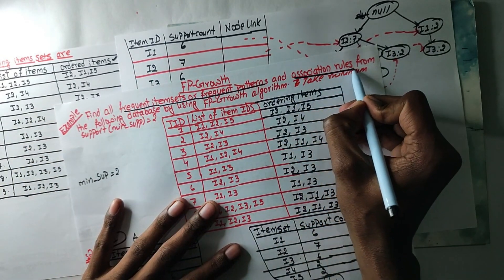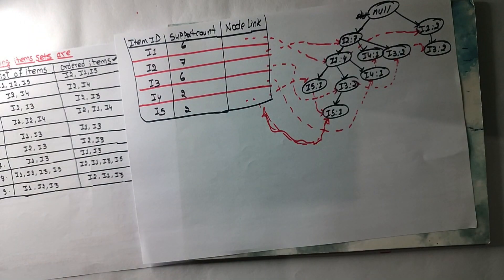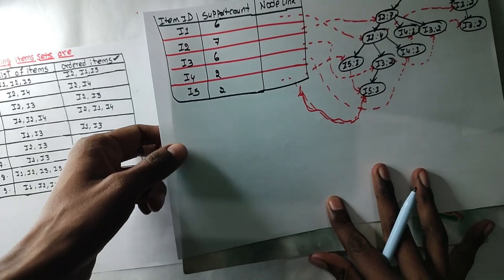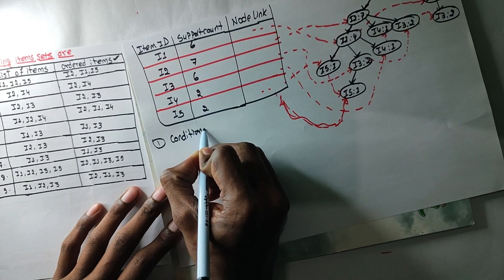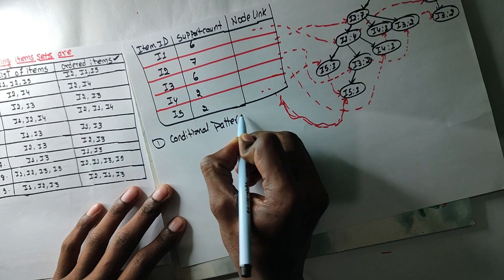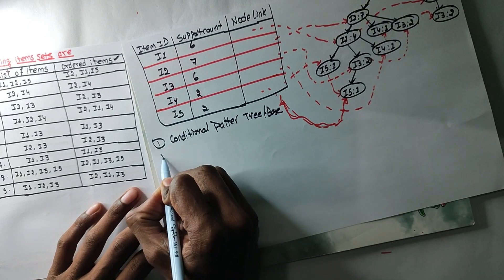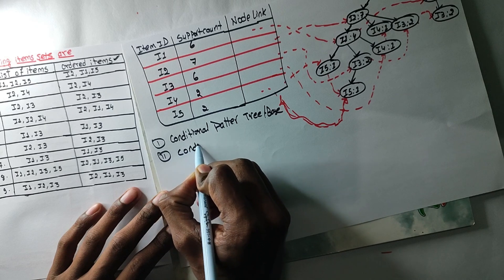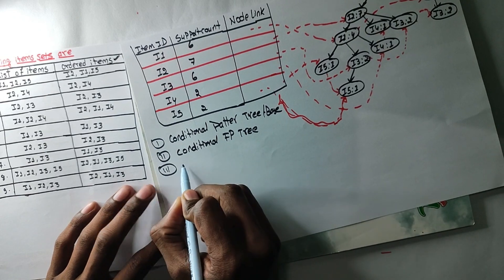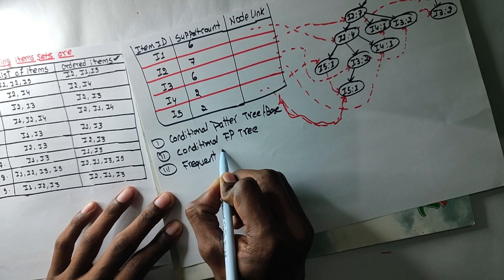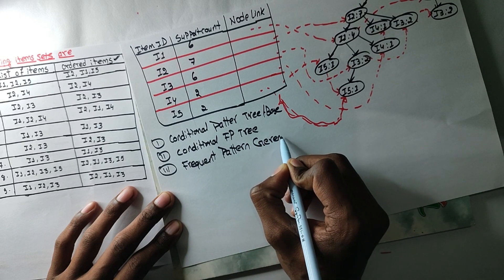In the fourth path we have to create a rule. In the third path we have to create a conditional pattern base. FP-tree step — the first path. Conditional pattern base can create a path, and the third one is the conditional FP-tree — the frequent pattern generator.